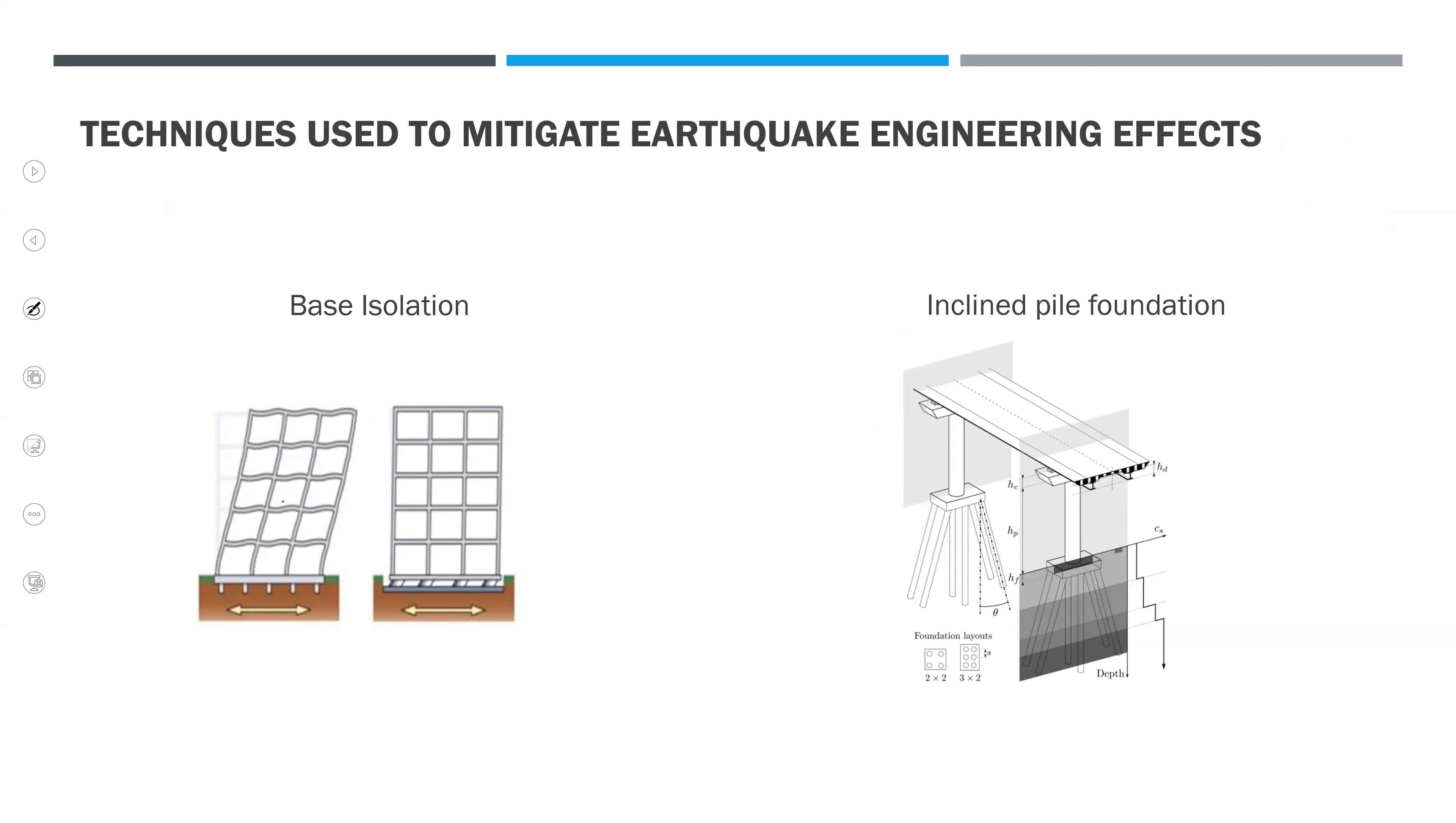Here I have the techniques that I use to mitigate the earthquake engineering effects. First, I have the base isolation method. Base isolation minimizes the earthquake damage by introducing specialized isolators. These are the isolators between building superstructure and the foundation. This is the superstructure and this is the foundation. I'll put them here to reduce the shaking of the ground.